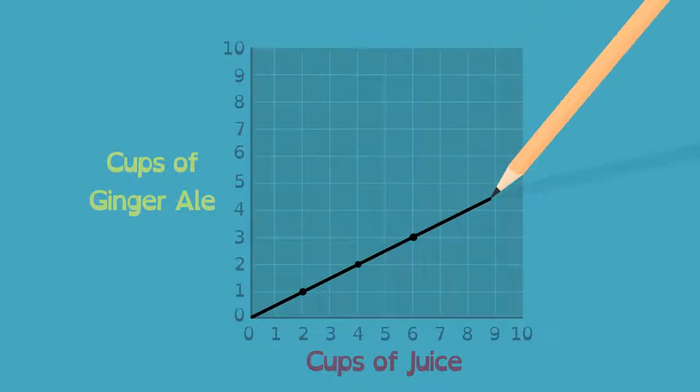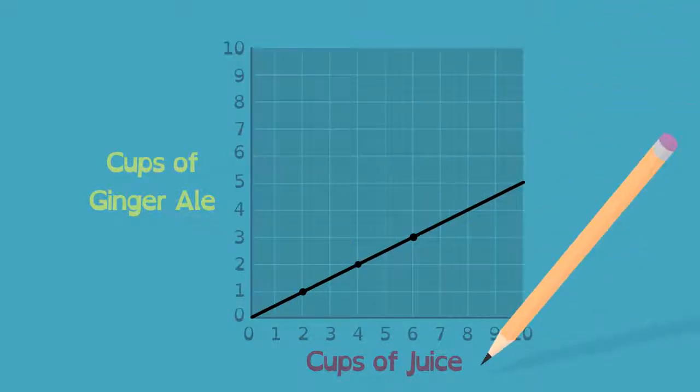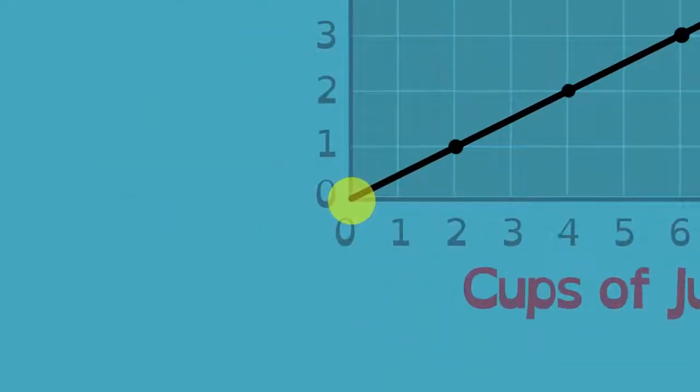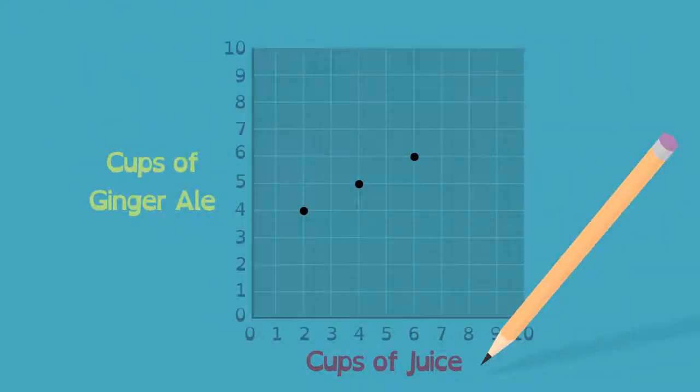A straight line through the data points shows a direct proportional relationship as long as the line goes through the origin. But what happens when the line doesn't begin at the origin?